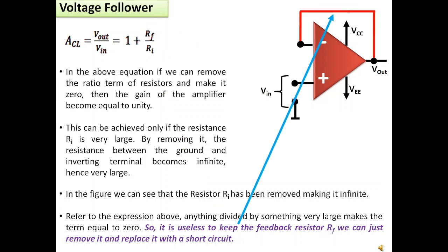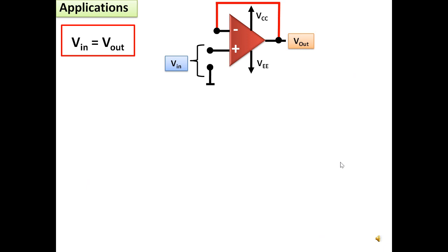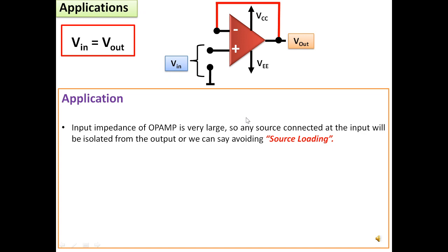In this figure we can see that the feedback resistance Rf has been completely removed and it has been replaced with a short circuit. The output voltage is now equal to the input voltage and hence we call this a unity gain buffer or a voltage follower. Now what are the applications of voltage follower?